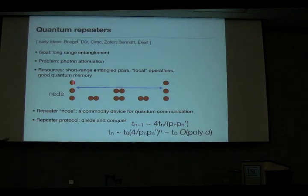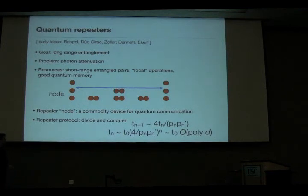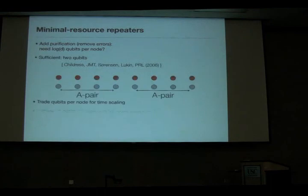However, this assumed logarithmic-in-the-distance resources in a given node, which is inconsistent with my initial statement of wanting a fixed number of qubits. But not all is lost — you can do a minimal resource version of this where you get around the purification problem that was requiring log(d) qubits per node by delocalizing purification.